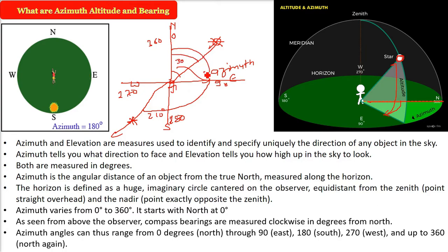So azimuth angles can therefore range from 0 degrees north, then east 90 degrees, coming to south 180, west 270, again going back to 0 or 360 degrees, north again.